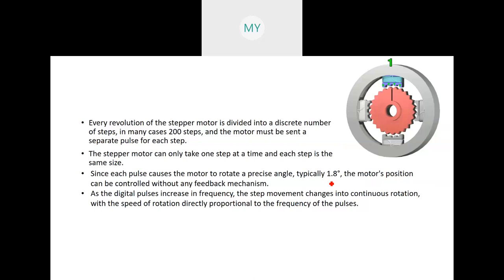In a stepper motor we don't require any feedback. As digital pulses increase in frequency, step movement changes into what appears to be continuous rotation, which is directly proportional to the frequency of the pulses. At high frequency and viewed from a distance it can look like continuous rotation, but in a stepper motor there is never true continuous motion — if continuous motion is required we can use a DC motor or synchronous motor.